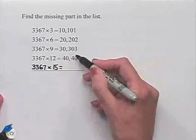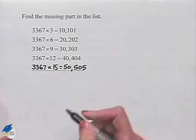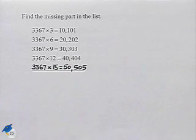And by the pattern that's been established, we see 50,505, which tells us that 3,367 times 15 equals 50,505.